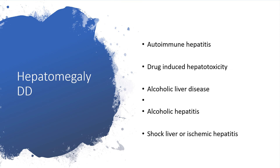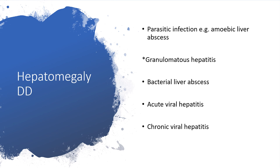Other conditions causing hepatomegaly include autoimmune hepatitis, drug-induced hepatotoxicity, alcoholic liver disease, alcoholic hepatitis, shock liver or ischemic hepatitis, parasitic infections like amoebic liver abscess, granulomatous hepatitis, bacterial liver abscess, acute viral hepatitis, and chronic viral hepatitis.